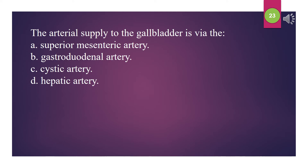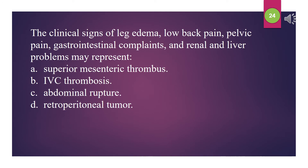The arterial supply to the gallbladder is via the: A. Superior mesenteric artery. B. Gastroduodenal artery. C. Cystic artery. D. Hepatic artery. The answer is C: Cystic artery. The clinical signs of leg edema, low back pain, pelvic pain, gastrointestinal complaints, and renal and liver problems may represent: A. Superior mesenteric thrombus. B. IVC thrombosis. C. Abdominal rupture. D. Retroperitoneal tumor. The answer is B: IVC thrombosis.